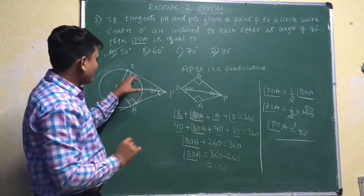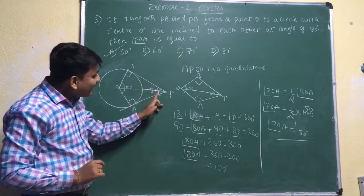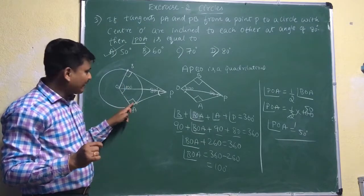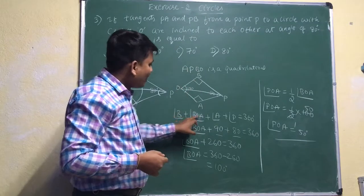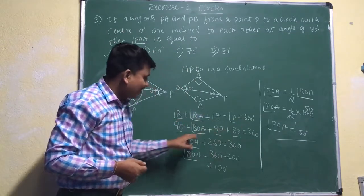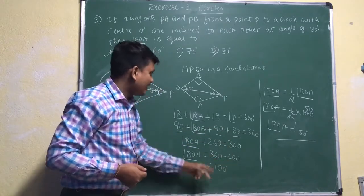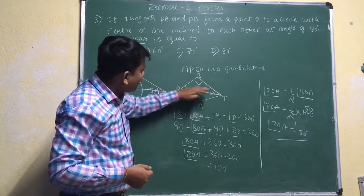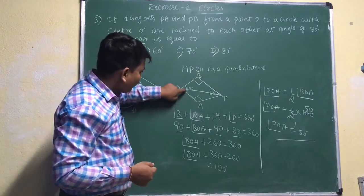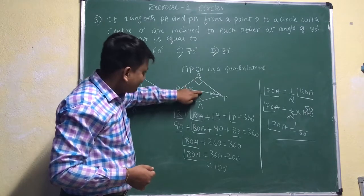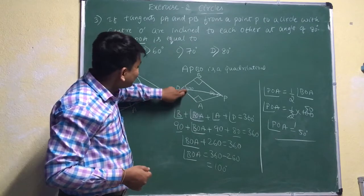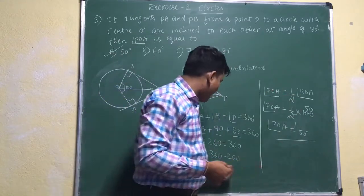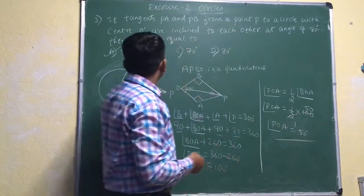To recap: two tangents PA and PB are inclined at 80 degrees. Since radius and tangent are always perpendicular, angles at A and B are each 90 degrees. Using the quadrilateral angle sum of 360 degrees, we find BOA equals 100 degrees. Since the two triangles formed are congruent, PO bisects angle BOA, so POA equals half of 100, which is 50 degrees. The correct answer is 50 degrees.